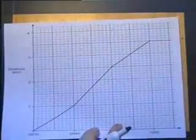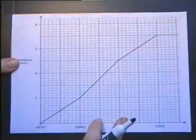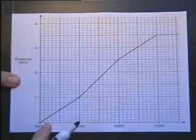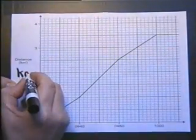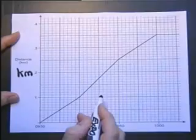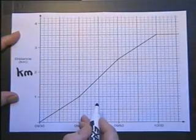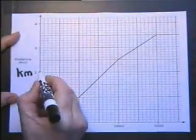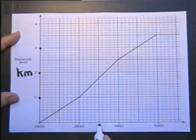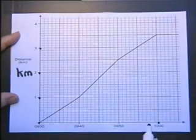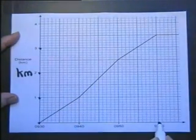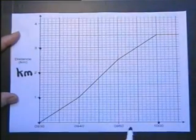Level 7 Key Stage 3 Examination Questions. Here we have a distance-time graph with distance in kilometers. Whenever you see any graph, spend a few minutes checking the scale. This goes 1 kilometer, 2 kilometers, 3 kilometers. Along here the time: that's 9:30, that's 10 o'clock, so that is half an hour—10 minutes, 10 minutes, 10 minutes.